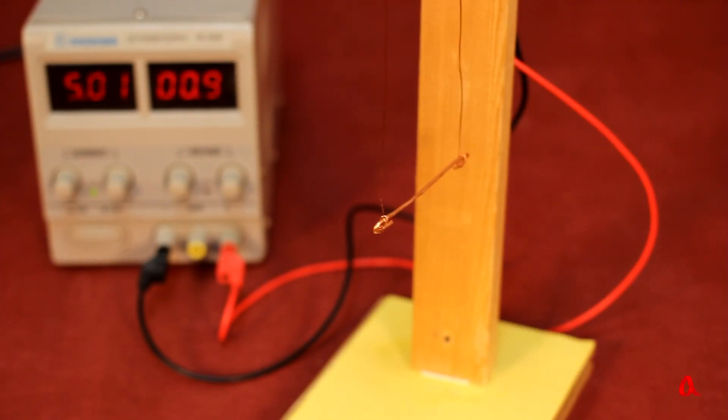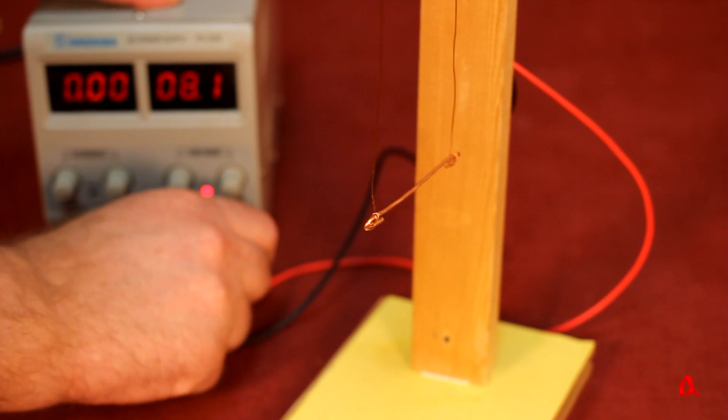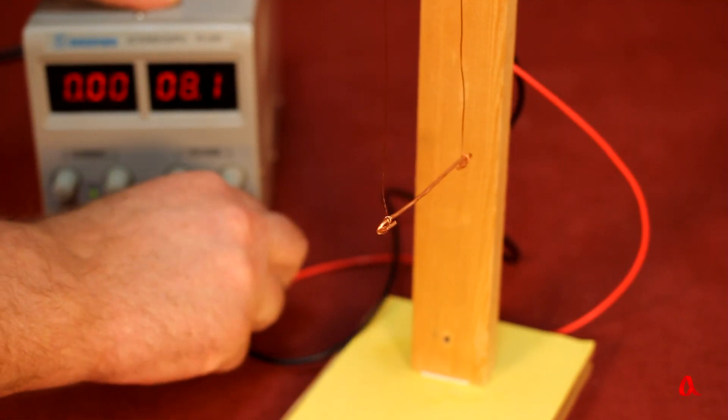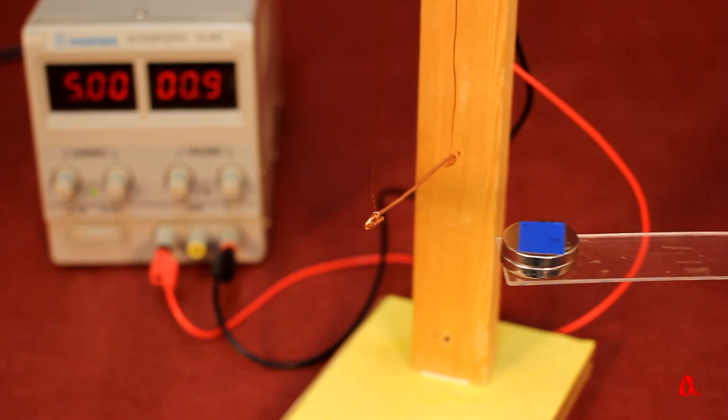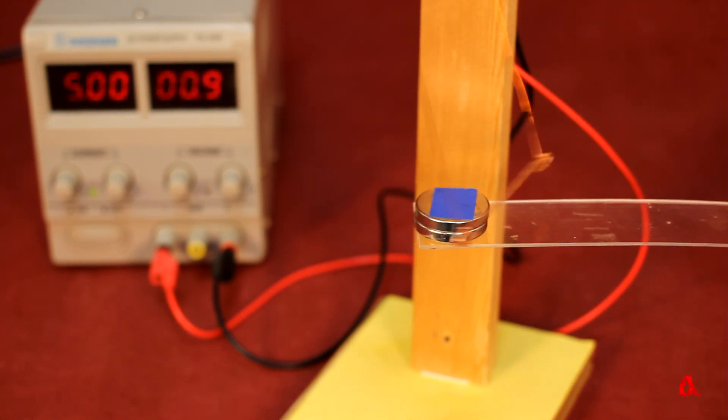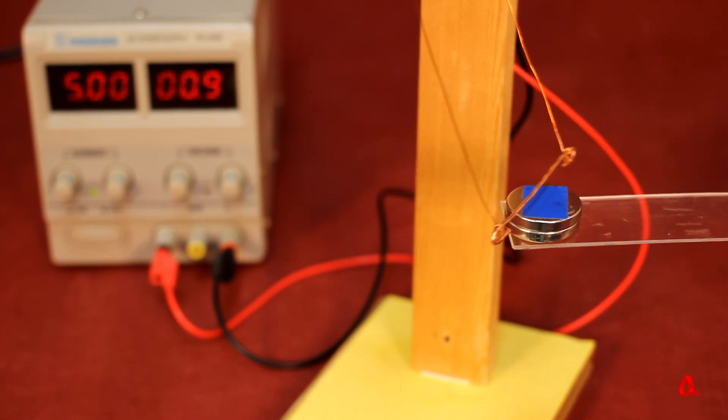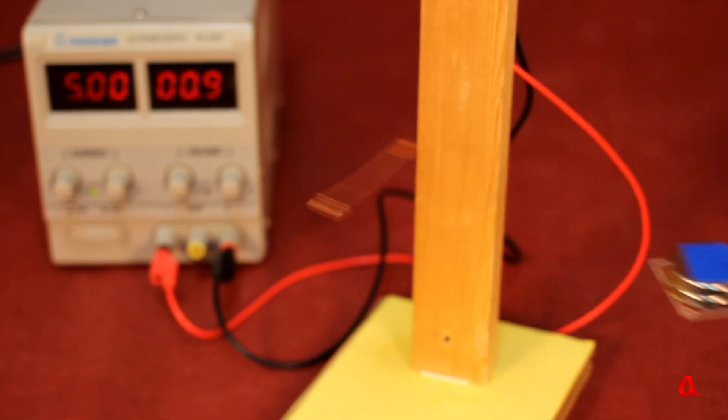We can change not only the orientation of the magnet, but also the direction of the current in the circuit. Previously, the wire over the south pole of the magnet deflected to the left, and now it is deflecting to the right. Let us turn the magnet over.